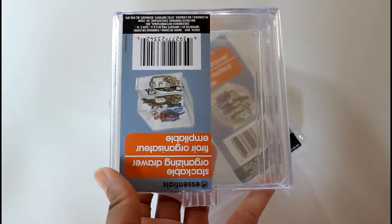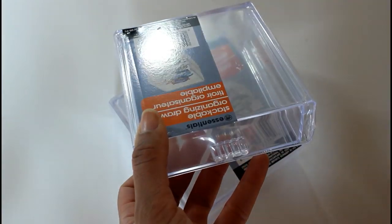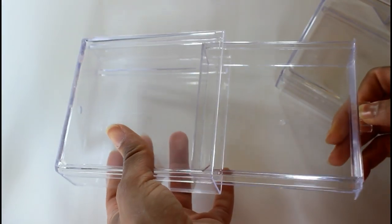First I'm going to be starting off with these little storage containers from the Dollar Tree. I'm just going to be setting the drawers aside. I won't be using them for this DIY.